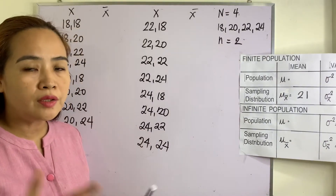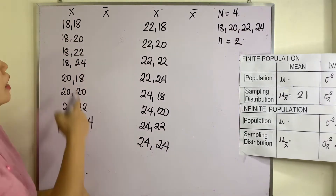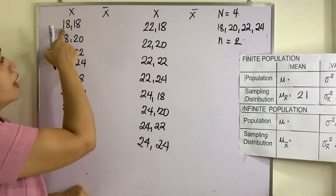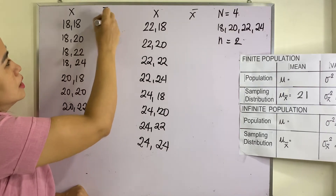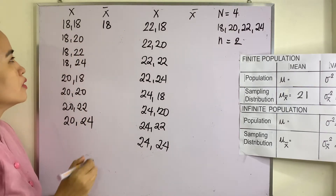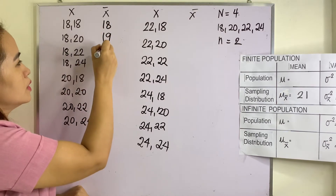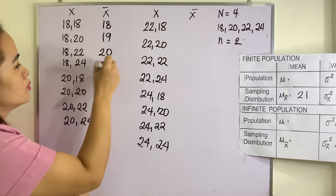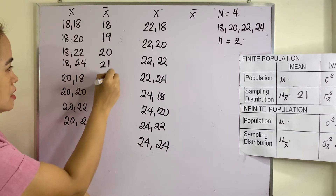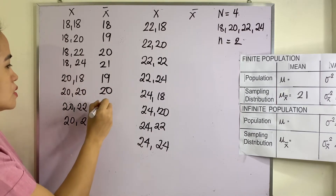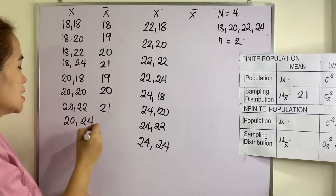I have already listed the 16 samples. Let us now get the sample mean. We have 18 plus 18 divided by 2 is 18. 18 plus 20 divided by 2 is 19. This one is 20. This one is 21. This one is 19. This is 20. This one is 21. And 22.